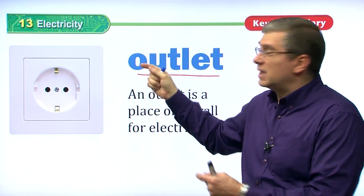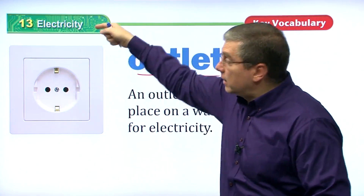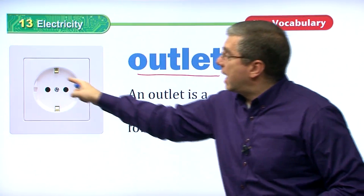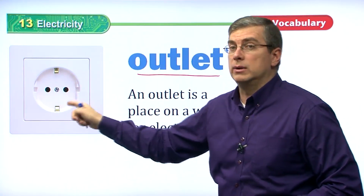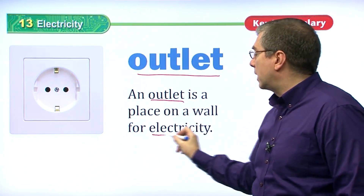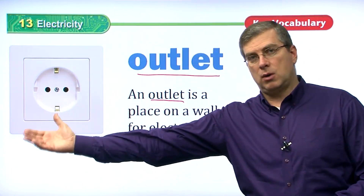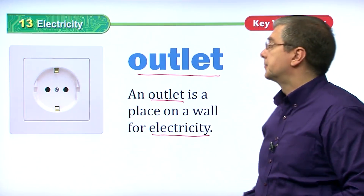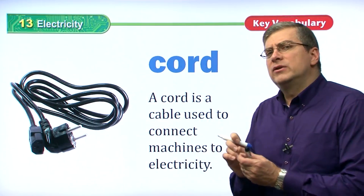An outlet is the place where the wire comes to. Wire carries electricity from the power plant to your house, and the wire comes to a stop right here at the outlet. So an outlet is a place on a wall for electricity — this is how electricity comes from the power plant to your house along a wire.